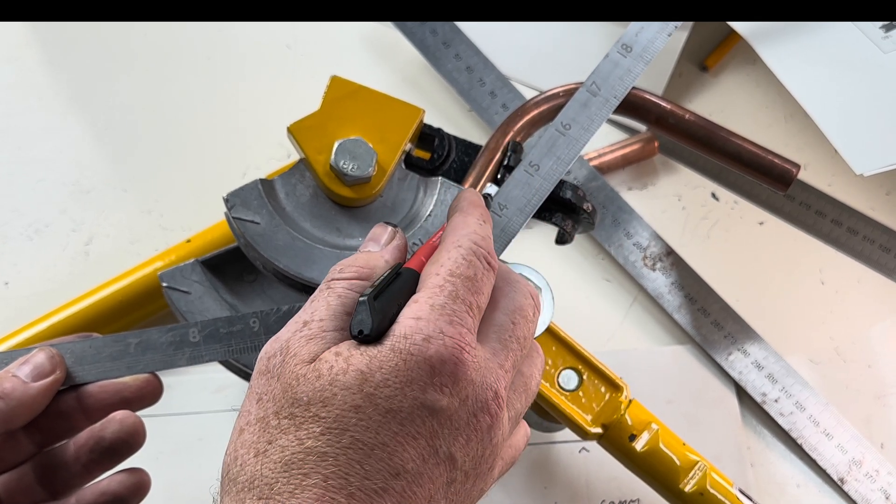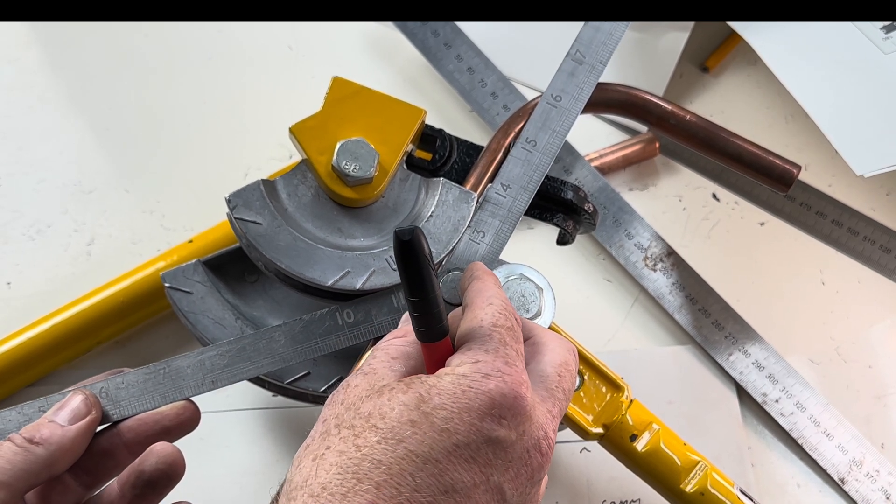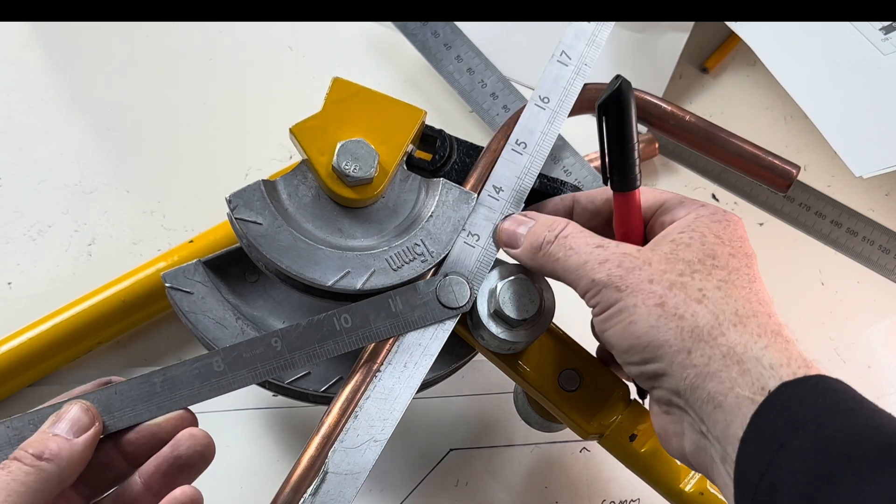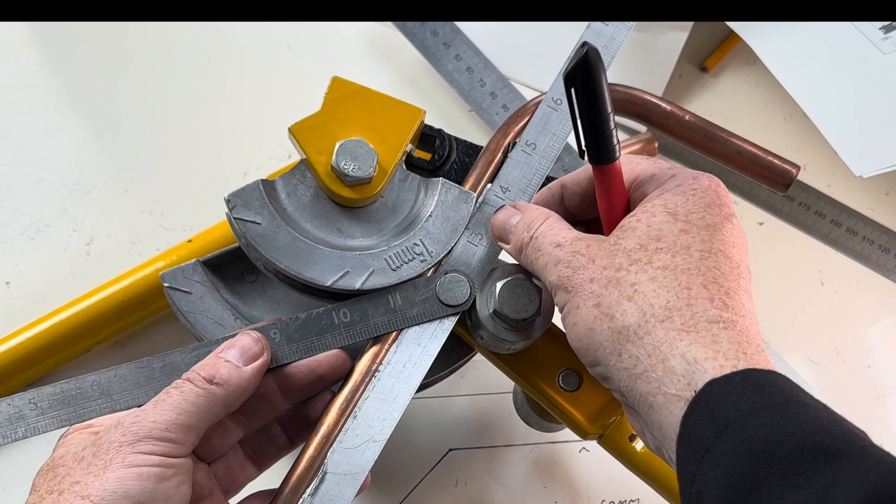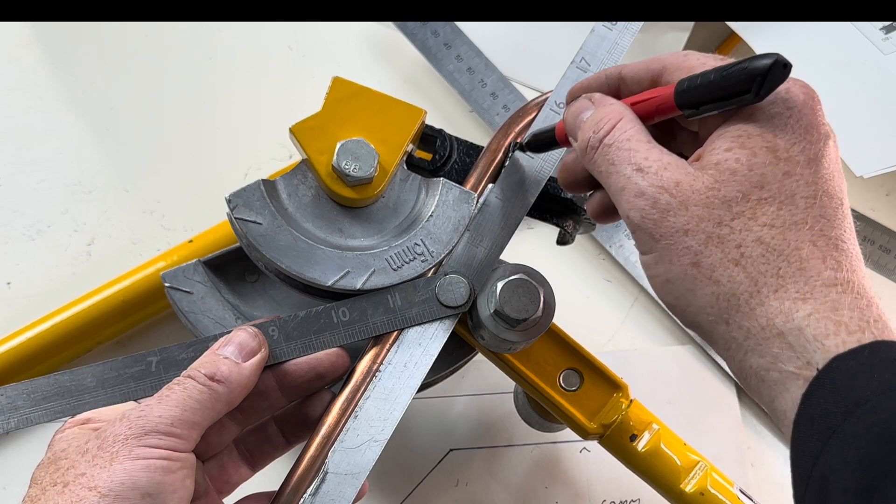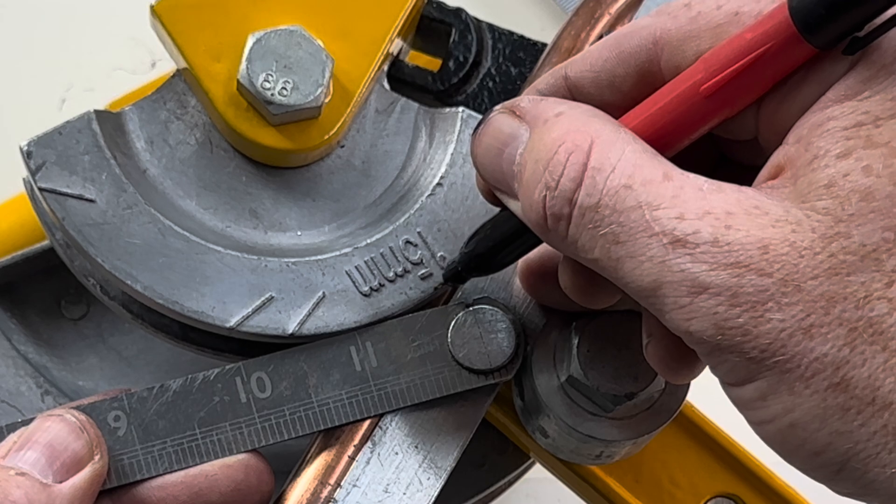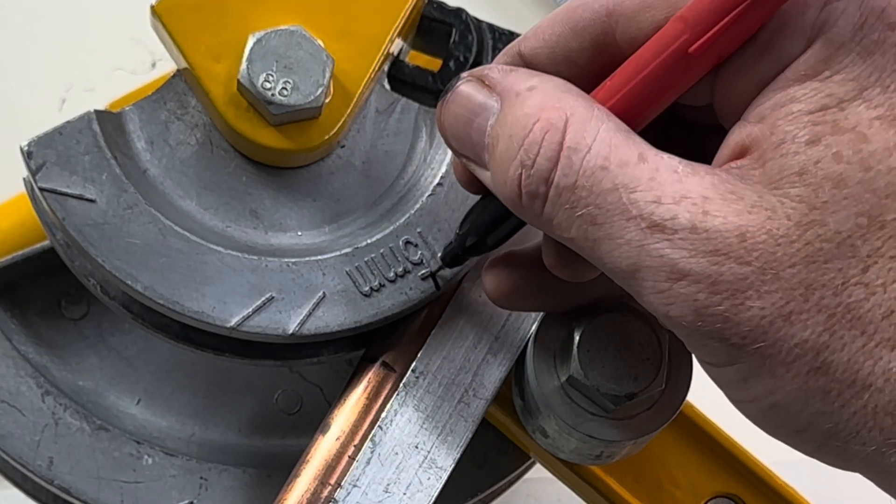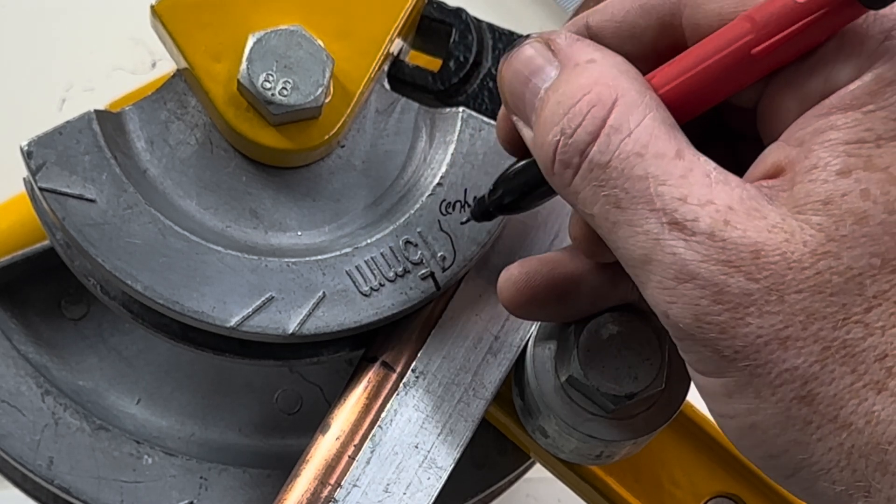So that's not parallel with the pipe. So it's parallel there and it's touching two sides of the former. Once again it's touching two sides of the former and the ruler is parallel with the pipe. Once we've done this we then mark here which is the centre where the centre of the 45 degree bend is going to go.